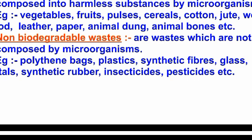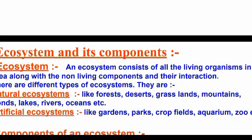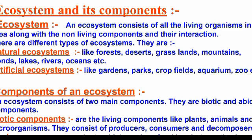So we have biodegradable and non-biodegradable waste. Next is ecosystem and its components. An ecosystem consists of all living organisms in an area along with non-living components and their interaction.